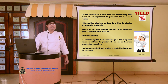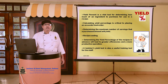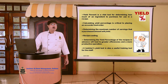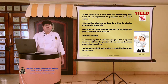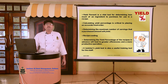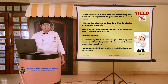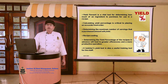Yield percentage is a vital tool for determining how much of an ingredient to purchase or use in a recipe. When we understand the net usable part from a particular raw material, we can understand how much of that ingredient must be procured from the market in order to produce a certain number of portions. This will provide a clear guideline to the larder chef on how much to order, keeping in mind the various pickups of the day.